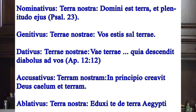We have some examples here. Nominativus: Domini est terra et plenitudo eius — the Lord's is the earth and its fullness. Genitivus: Vos estis sal terre — you all are the salt of the earth. Terre means 'of the earth.'